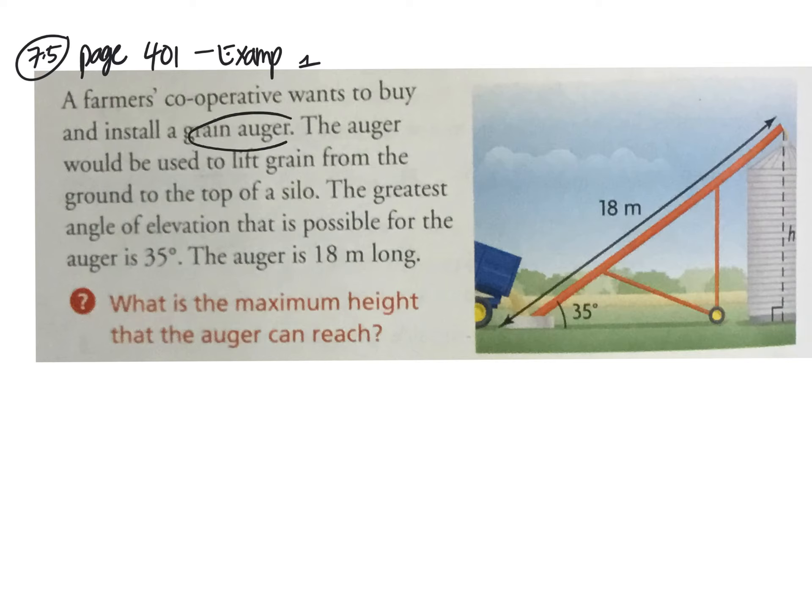They want to buy and install a grain auger, and the greatest angle of elevation possible for the auger is 35 degrees. The diagram's drawn for you. Remember, angle of elevation is with a horizontal and a line of sight going up to an object. So this is the angle of elevation, and the auger is 18 meters long. It can't go higher than from the ground to here, so we have to find the height.